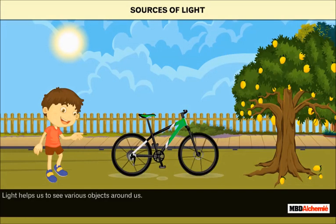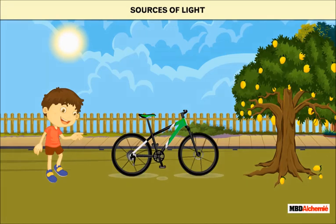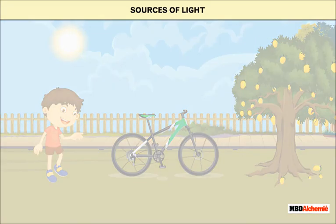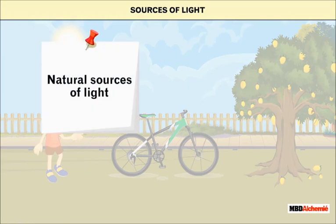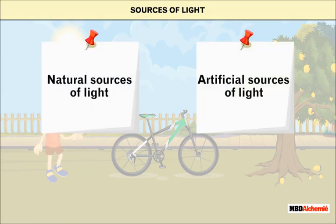Light helps us to see various objects around us. There are different sources of light. These sources of light are categorized as natural and artificial sources of light. Let us learn about different sources of light.